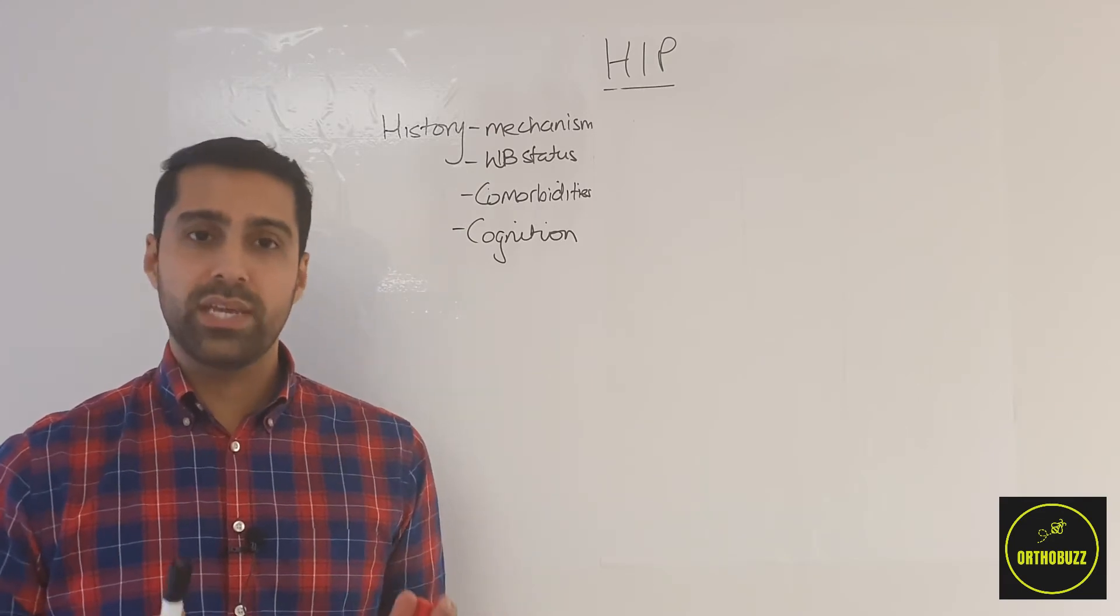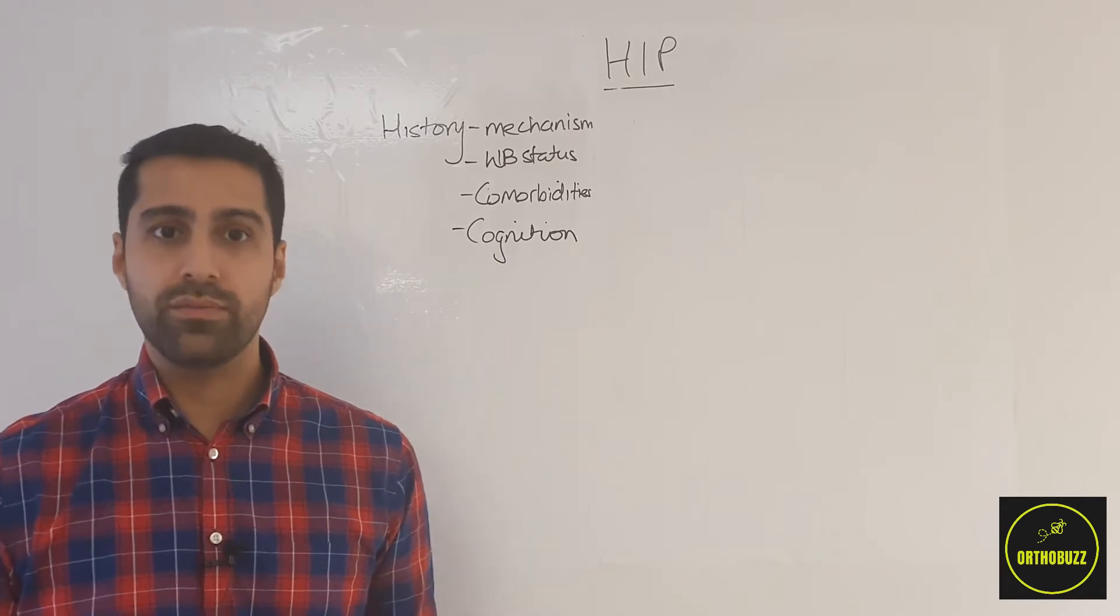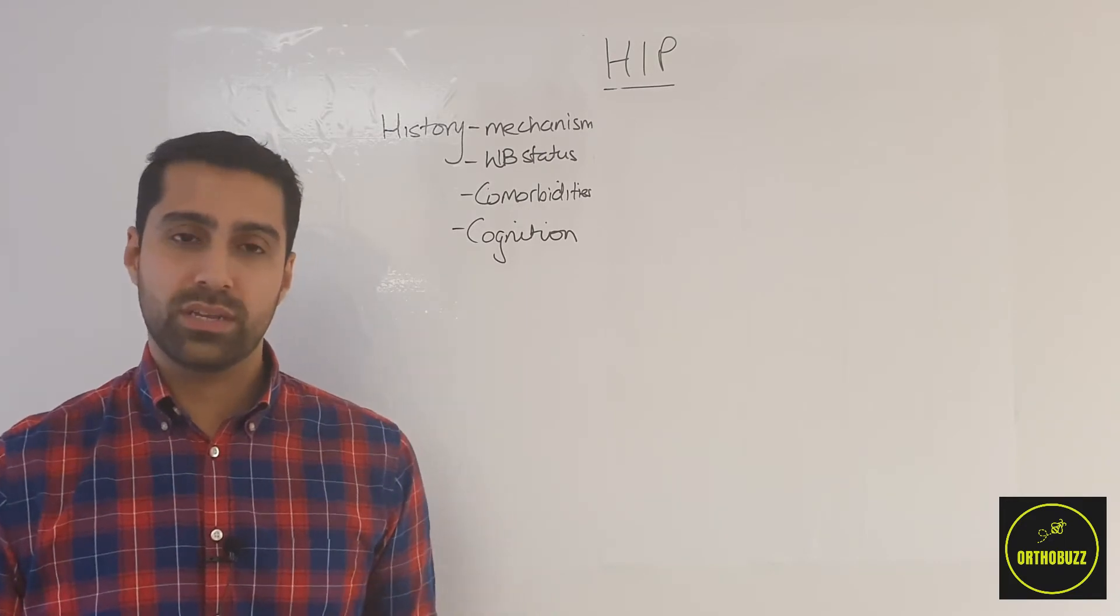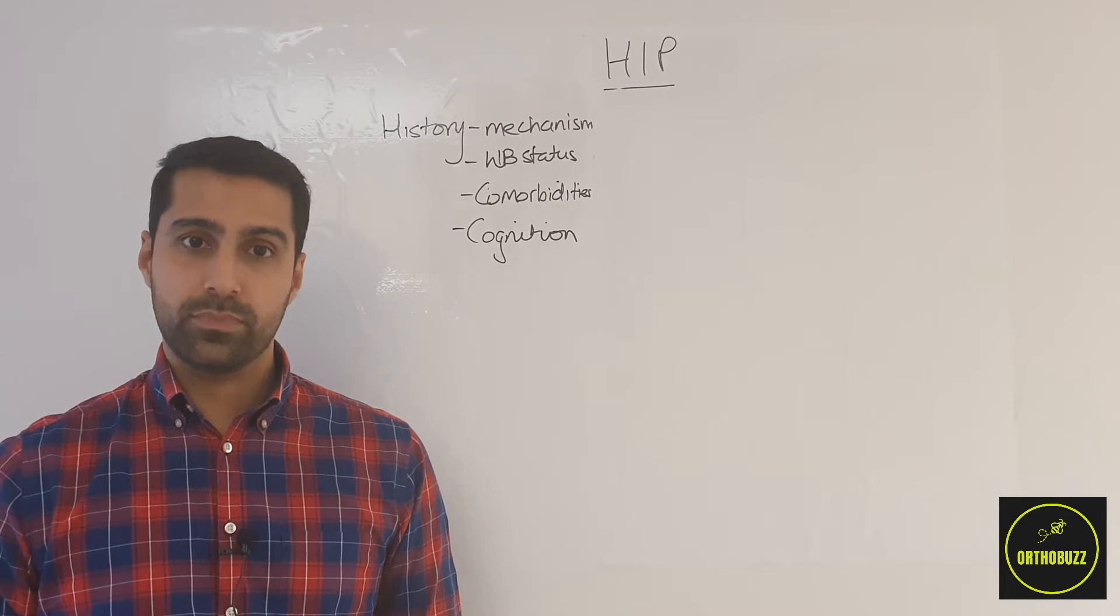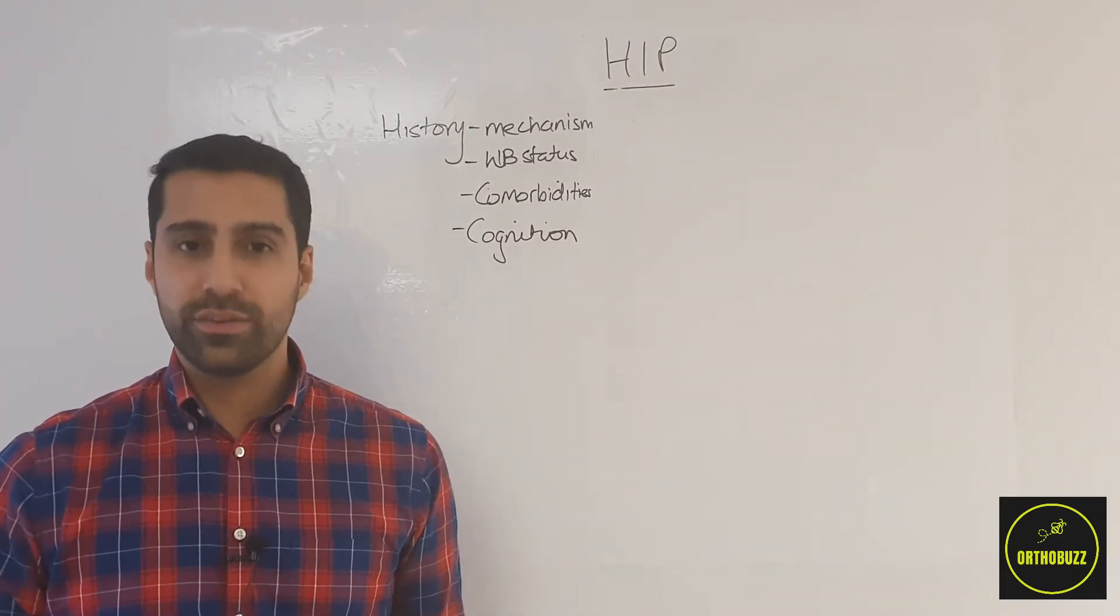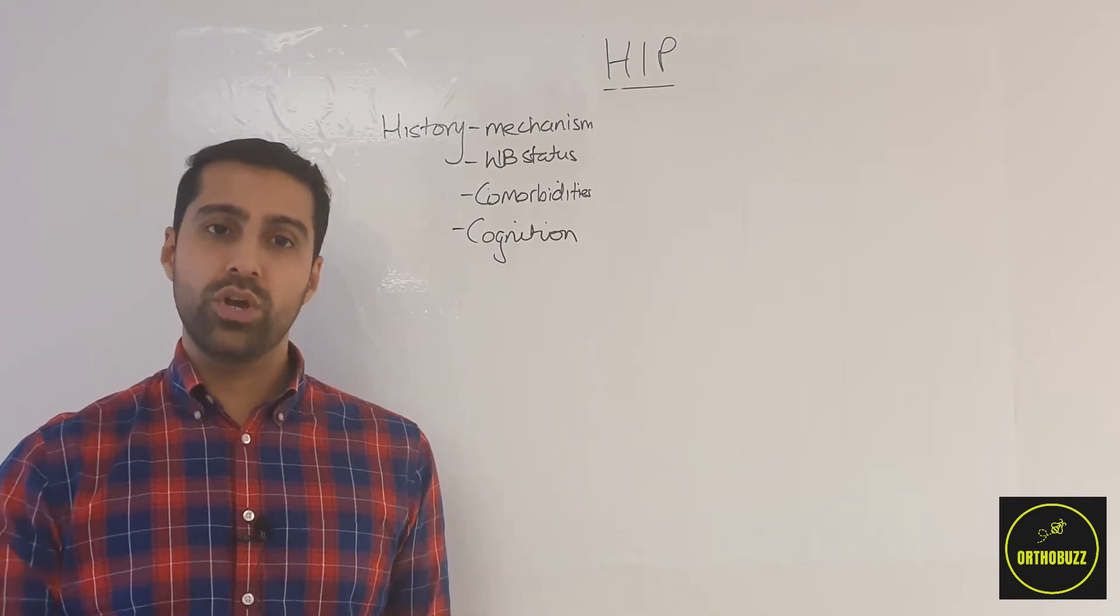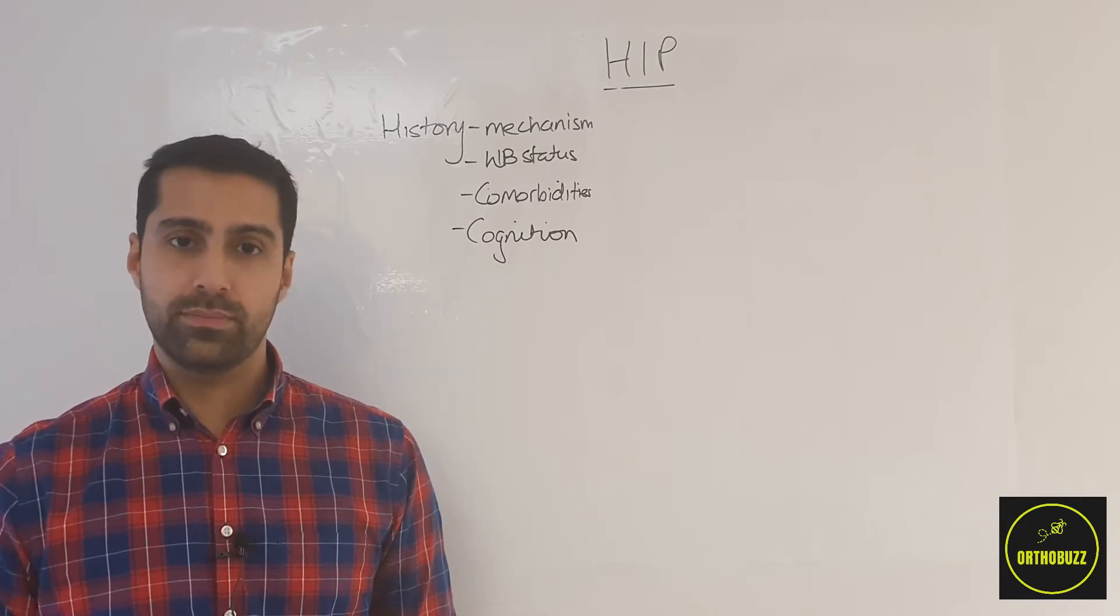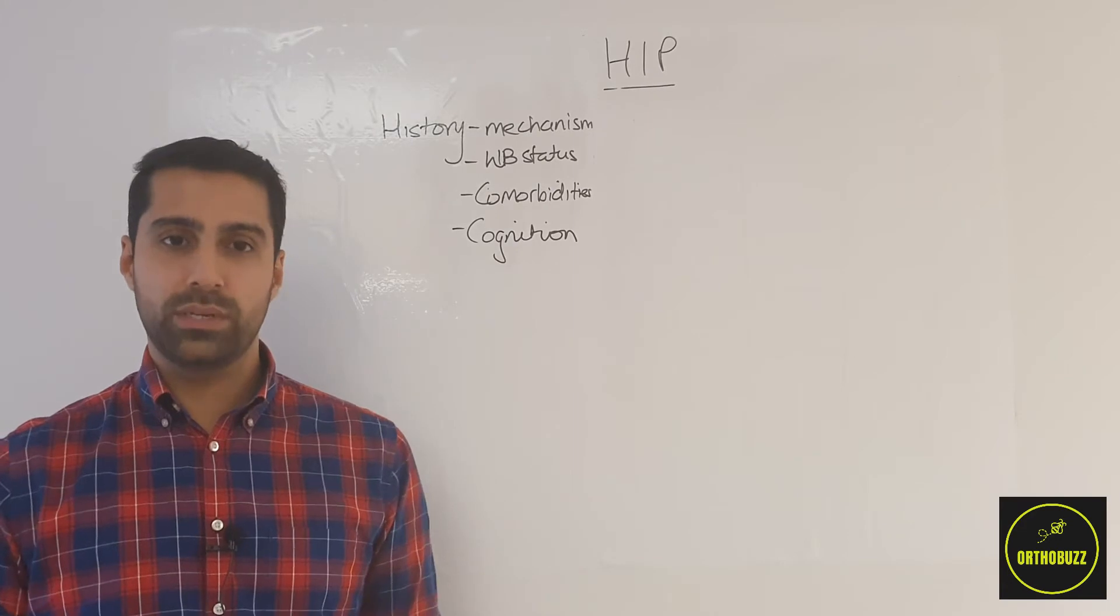So after you've taken a history, you then want to carry out a neurovascular assessment of her lower limbs and examine the hip as well. For a detailed lower neurovascular assessment, please see one of our other videos. Examining the hip, you'd want to look for a few characteristic features. Firstly, all orthopaedic examinations progress through a look, feel, move structure, and this is no different. So looking at the hip, you're going to be looking to see if there's any deformity.